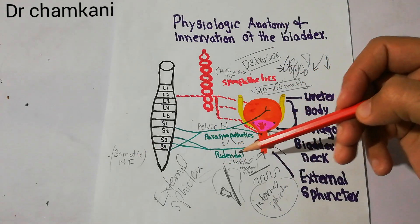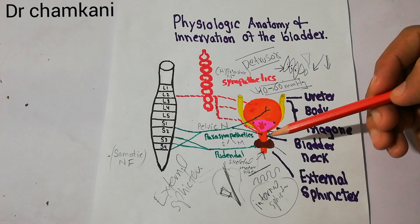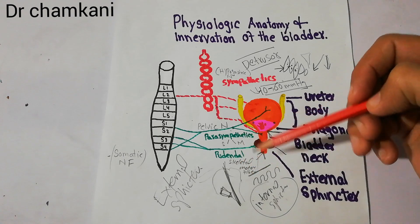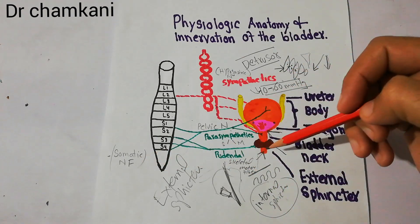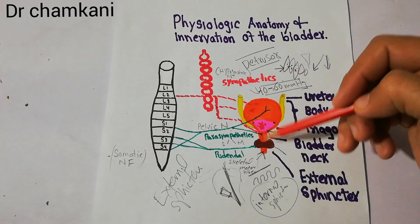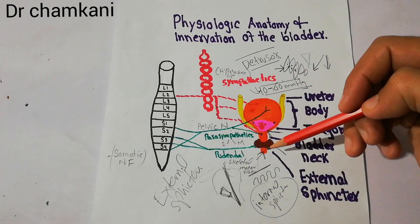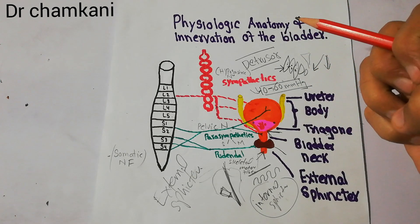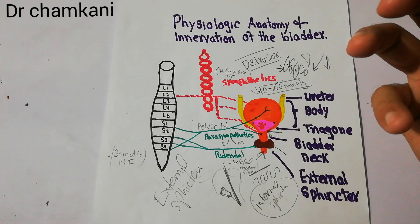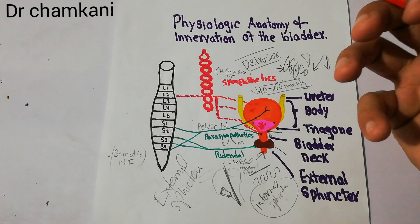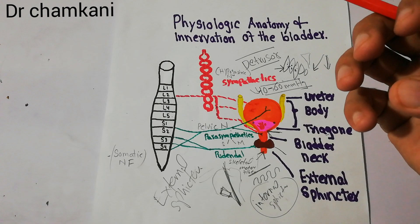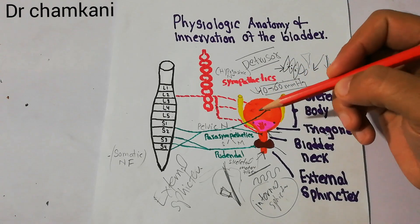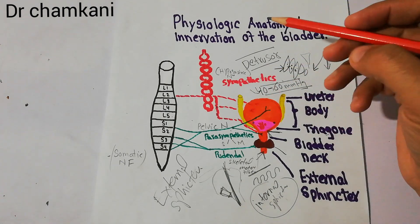The pudendal nerve is important because with its help, the skeletal motor fibers — which are a kind of somatic fibers — innervate the external sphincter, and human beings are able to voluntarily control the urination process or voluntarily allow urination. It is very important for giving control.